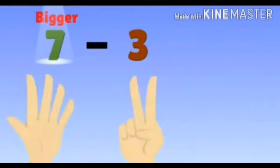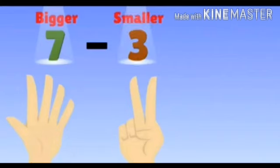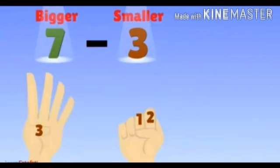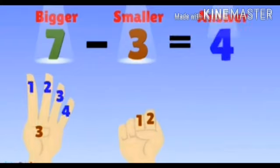Now we will do the method with fingers. Seven minus three — put out seven fingers, then put down three fingers. Counting down: 1, 2, 3 — three fingers put down. How many are left? Counting: 1, 2, 3, 4 — four fingers are left. So seven minus three is equal to four. From the big number to the smaller number we get the answer in subtraction.